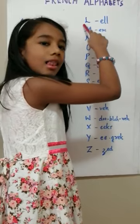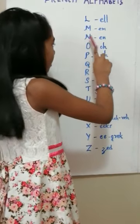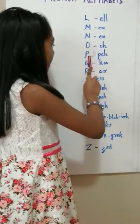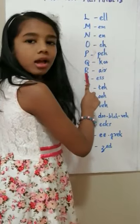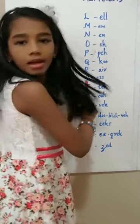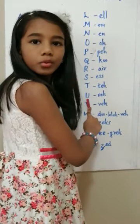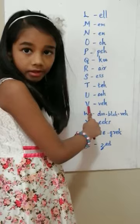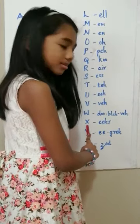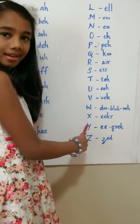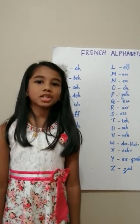L, L, M, M, N, N, O, O, P, P, Q, Q, R, R, S, S, T, T, U, U, V, V, W, W, X, X, Y, Y, Z, Z. Now we can sing the French alphabet song.